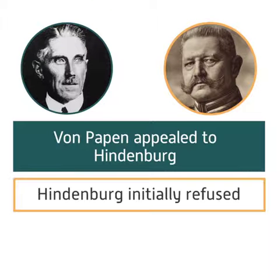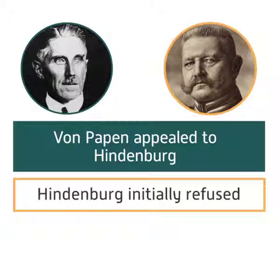President Hindenburg initially refused. However, Schleicher's resignation provided him with little other option. Following a meeting with von Papen on the 30th of January 1933, Hindenburg reluctantly agreed to appoint Hitler as Chancellor.